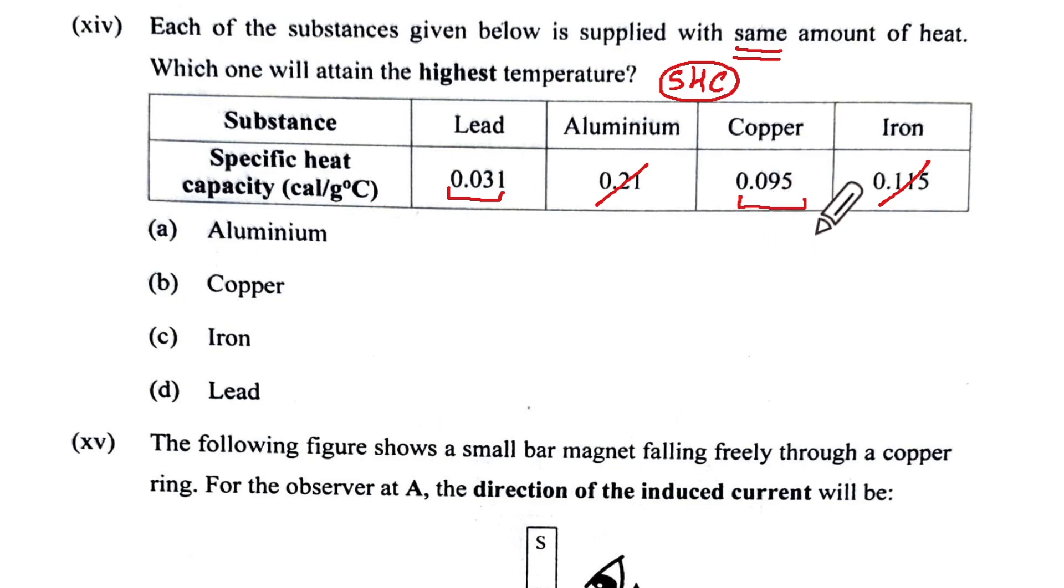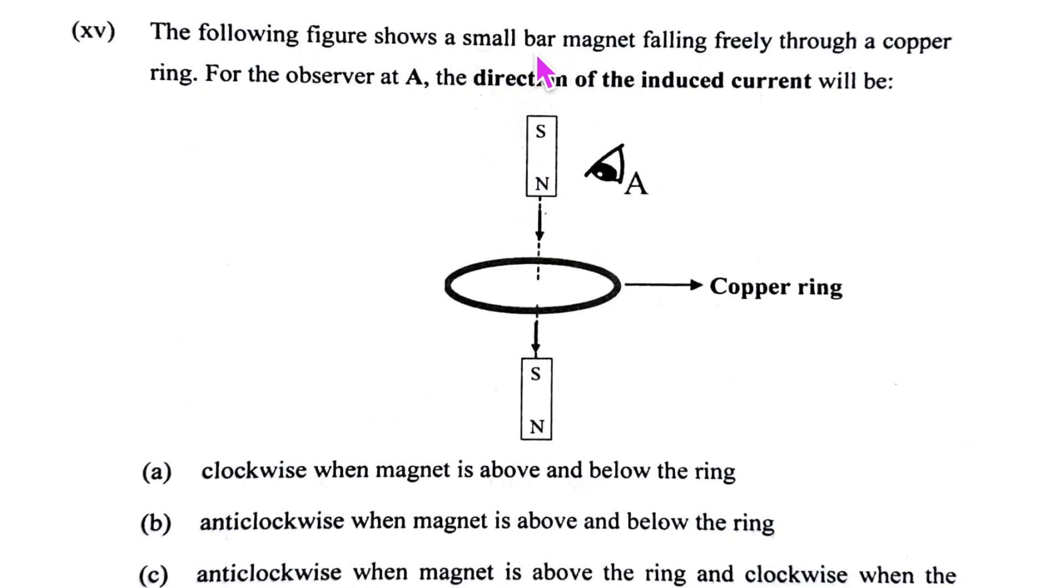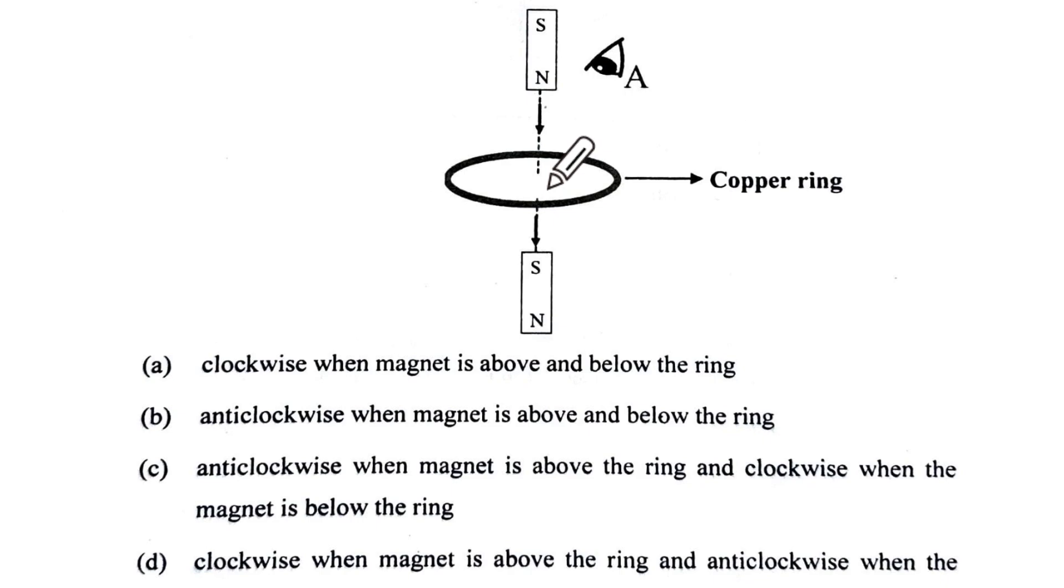The following figure shows a small bar magnet falling freely through a copper ring. For an observer at A, the direction of the induced current will be, north pole is coming closer so there will be anticlockwise current here. So they will be north this side and south this side in this position, that means when it is above. So anticlockwise current on the top surface, anticlockwise when it is above is correct.